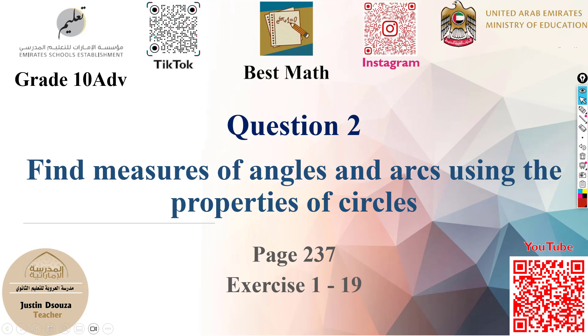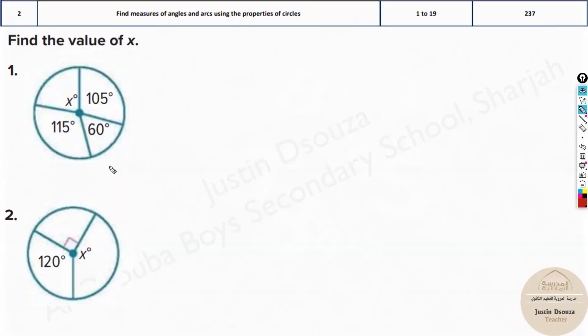Question two is to find angle measures using different properties of circles. Here we have been given a circle where one angle is unknown. That is x degrees but others are all known. So how do we find this? It's very simple.